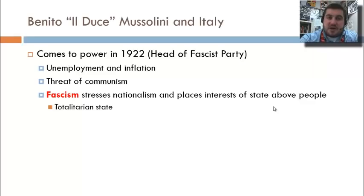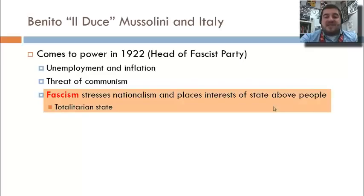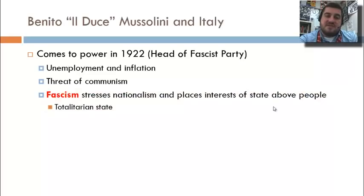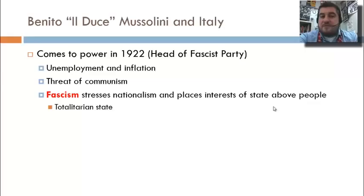Next up is Italy, where Benito Mussolini came to power as head of the Fascist Party. The Fascist Party stressed nationalism and demanded that everybody place the interests of the country above their own. It was a type of repression that governments used. People were willing to listen because of the Great Depression, which hit parts of Europe a bit earlier. Italy did not become communist, but they feared the threat of communism — a fear shared even in the United States in the 1920s.